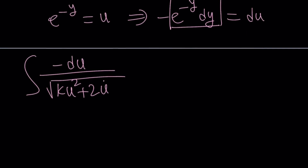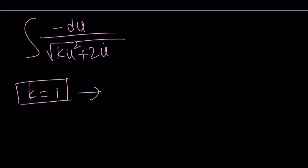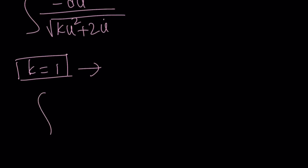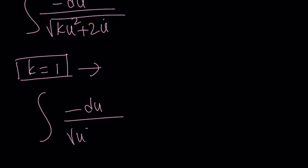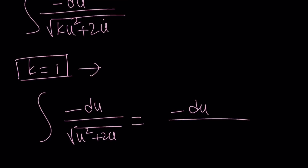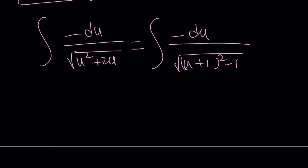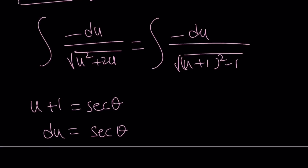That expression u squared plus 2u can be written as a perfect square minus 1 — that's (u+1)² - 1. Integrating this should go through trigonometric substitution. I'm going to replace u plus 1 with secant theta. Then du equals the derivative of secant, which is secant times tangent, times d theta.